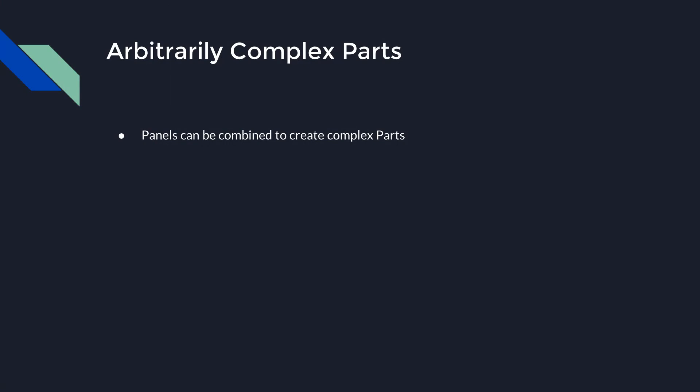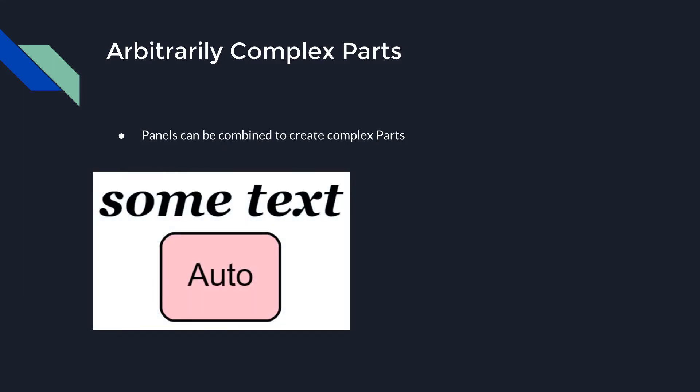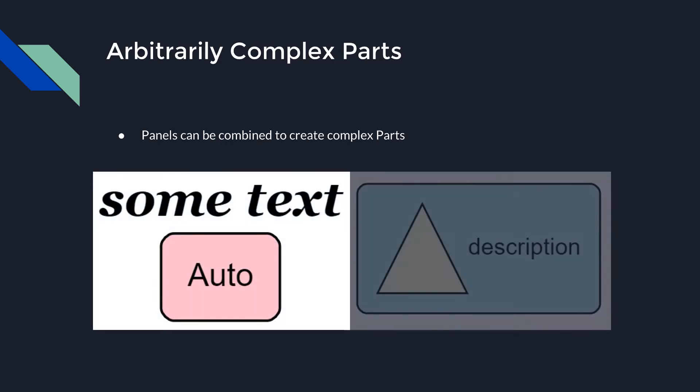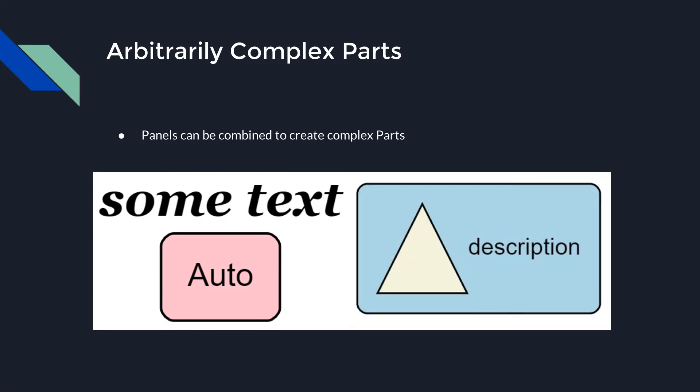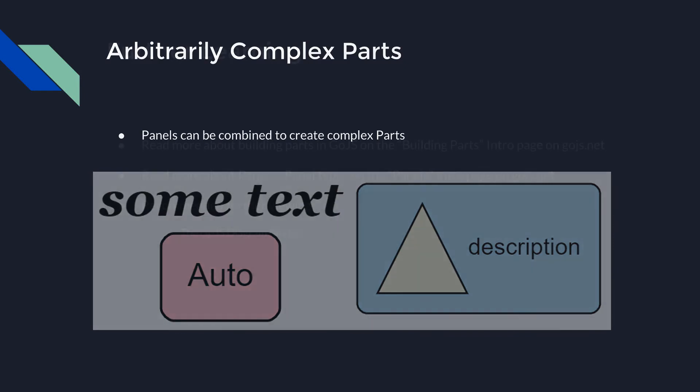You can combine as many panels as you want to create arbitrarily complex parts. For example, you can nest an Auto panel inside a Vertical panel, or nest a Horizontal panel in an Auto panel. For an in-depth look at combining various panels and GraphObjects to create complex parts, see our video 'Building Parts with Go.js Templates'.